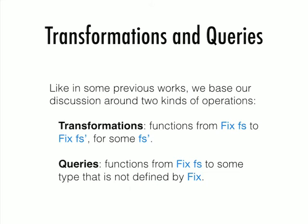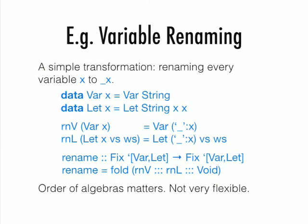This recording that pos is the membership witness which also works as an index, so extractAt of pos of Ks gives you that F algebra. I'm going to show you some examples of using this library. Following some previous work, we basically talk about two kinds of operations: transformations and queries. A transformation is a function which takes a fixed point of something to a fixed point of something else, and these Fs and Fs prime may not be the same.